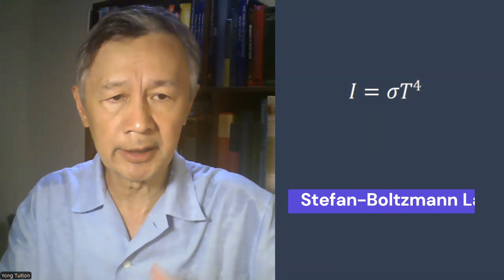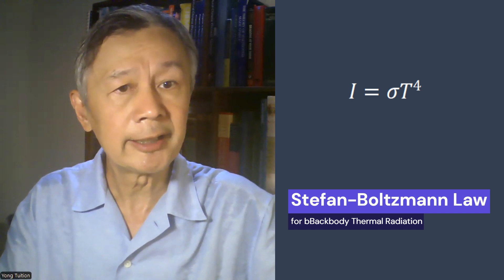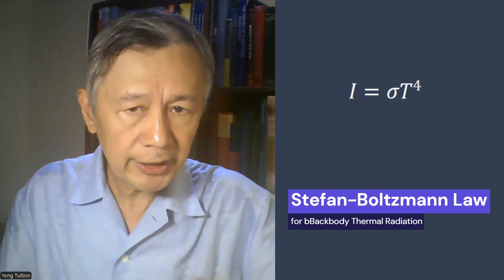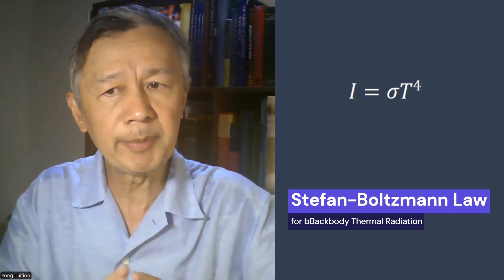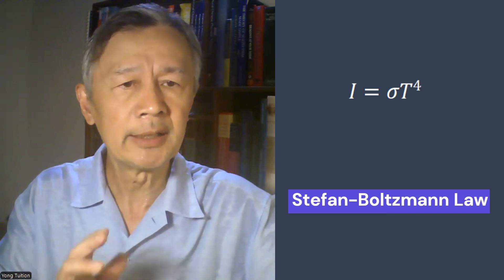Prior to Max Planck's breakthrough work in 1901, it had been known that the intensity of thermal radiation could be well described by the Stefan-Boltzmann law — namely, the intensity I equals sigma, the constant, times the temperature in Kelvin to the power of 4. It is ridiculously simple, as the intensity in watts per meter squared depends on nothing but the emission temperature of the object, irrespective of any microscopical structure and mechanism involved during thermal radiation. In many textbooks, the temperature here is defined as the surface temperature of the thermal radiation emitter.